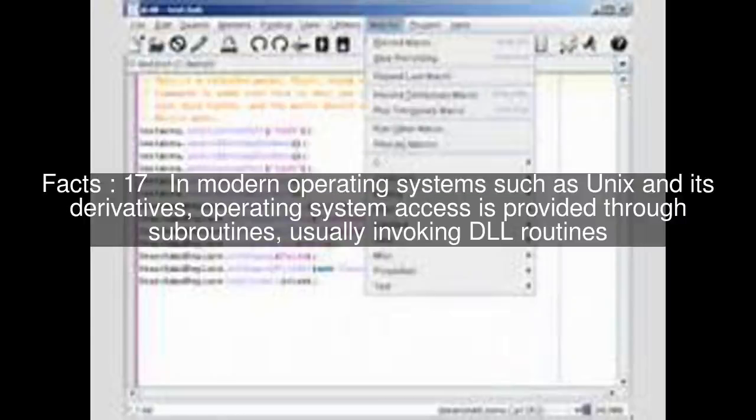In modern operating systems such as Unix and its derivatives, operating system access is provided through subroutines, usually invoking DLL routines. High-level languages such as C offer comprehensive access to operating system functions, obviating the need for assembler language programs for such functionality.